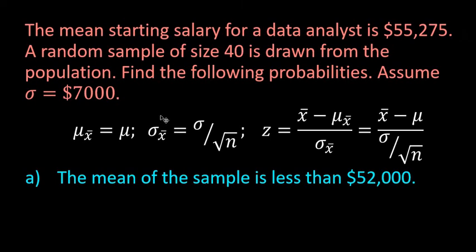For this video, I want to show you how to find probabilities when dealing with the central limit theorem. What we have here is the mean starting salary for a data analyst is $55,275. A random sample of size 40 is drawn from the population, and we're going to find the following probabilities. Assume that sigma is $7,000.